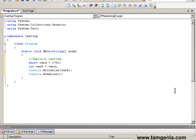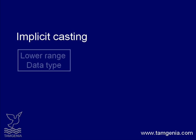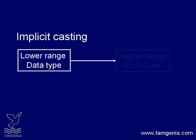Similarly, we can cast byte to short, or byte to integer. So through implicit casting, we can cast or convert a lower range data type to a higher range data type.